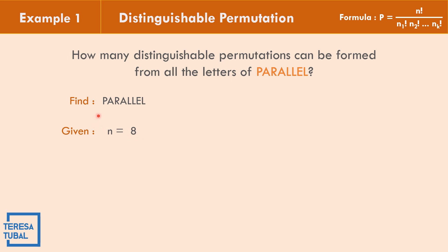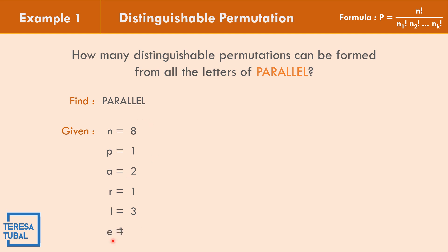Now let us identify which letters are repeated. P appears only 1 time. A appears 2 times. R appears only 1 time. L, if we count, appears 3 times. And E appears only 1 time.